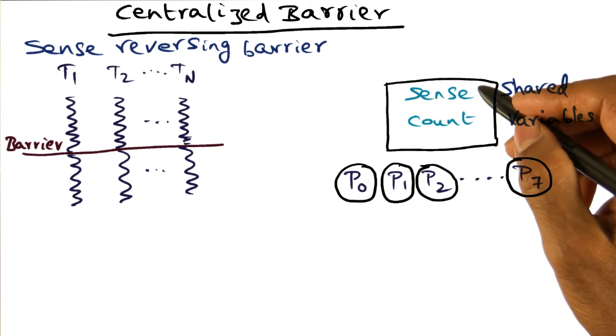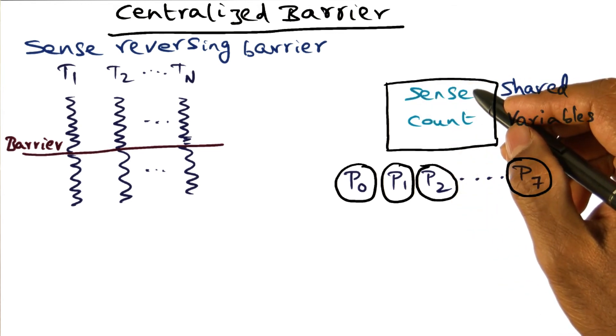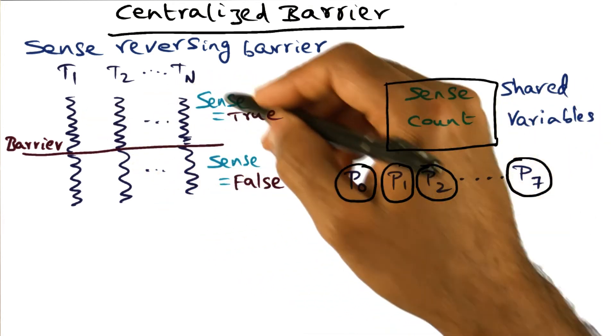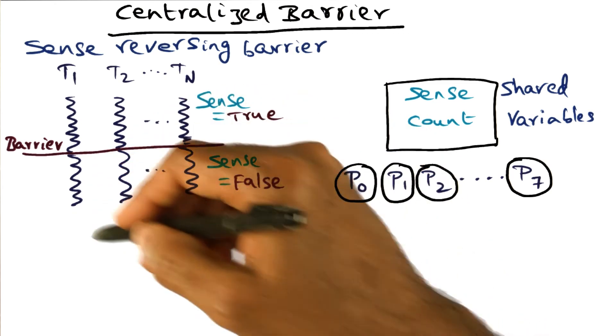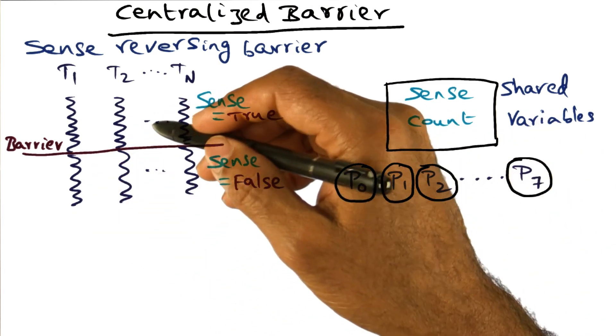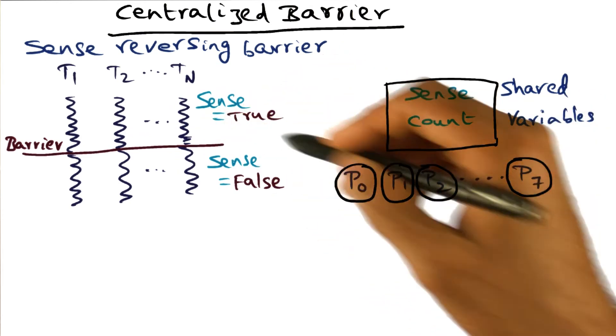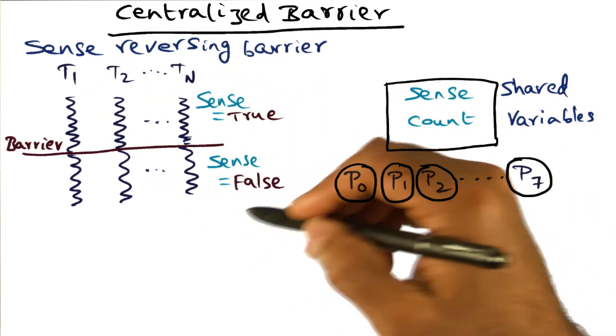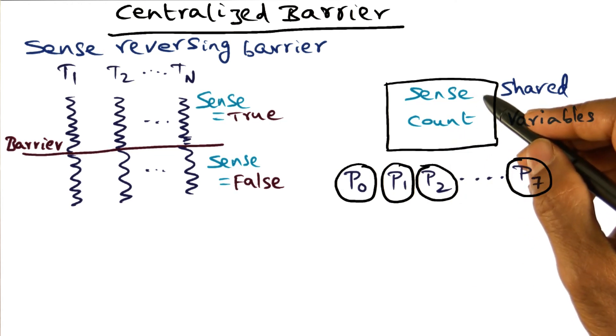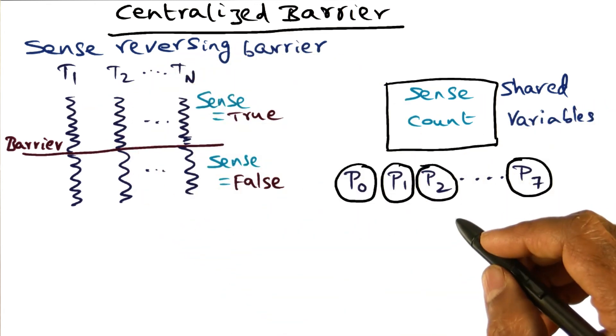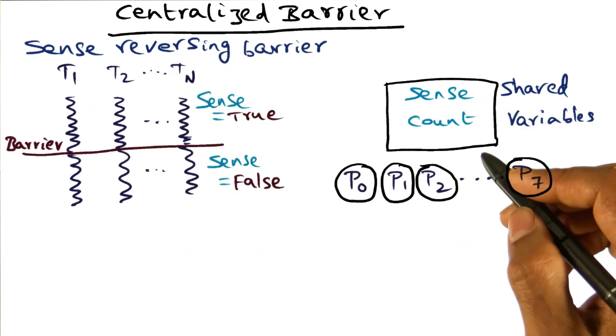The idea behind the sense variable is that the sense variable is going to be true for one barrier episode and false for the next barrier. At most you have one barrier at a time, and therefore if we call this barrier a true barrier, the next barrier is going to be the false barrier. That's the way we can identify which barrier we are in at any particular point of time for a given thread by looking at the sense variable.